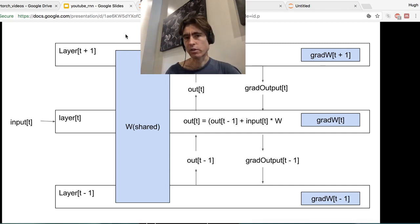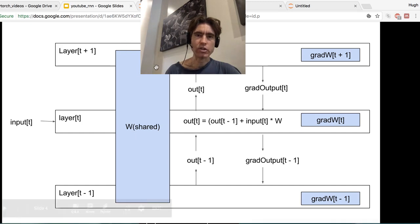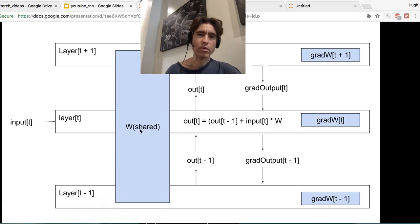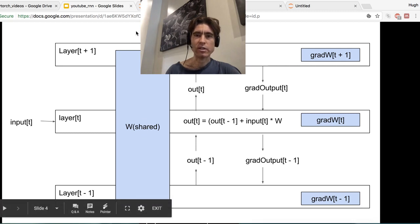So how do we minimize the loss? Well, we calculate, which is the backprop, how does the loss change when we change the weights. And then if we know how the loss changes when we change the weights, we can change the weights to make the loss go down.